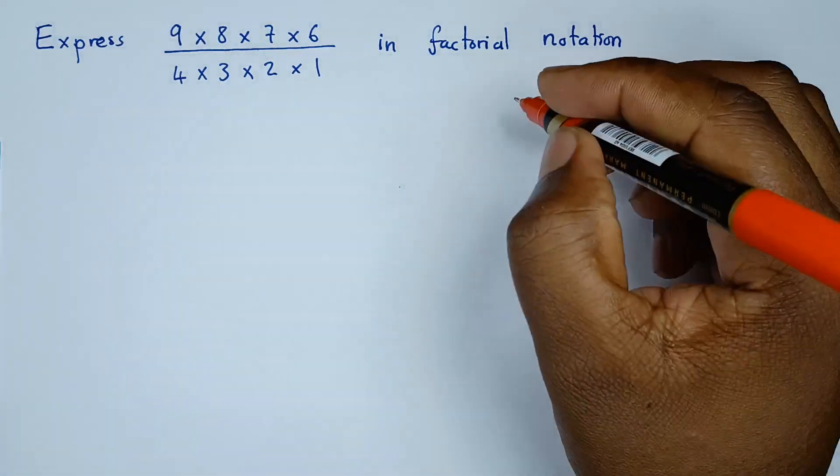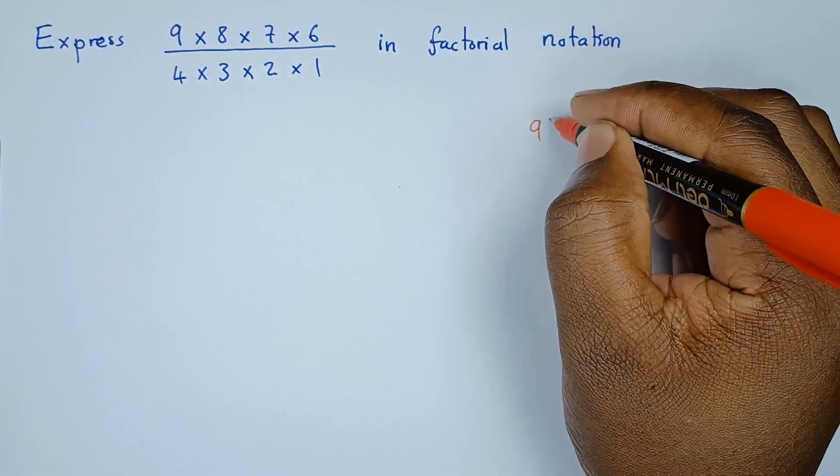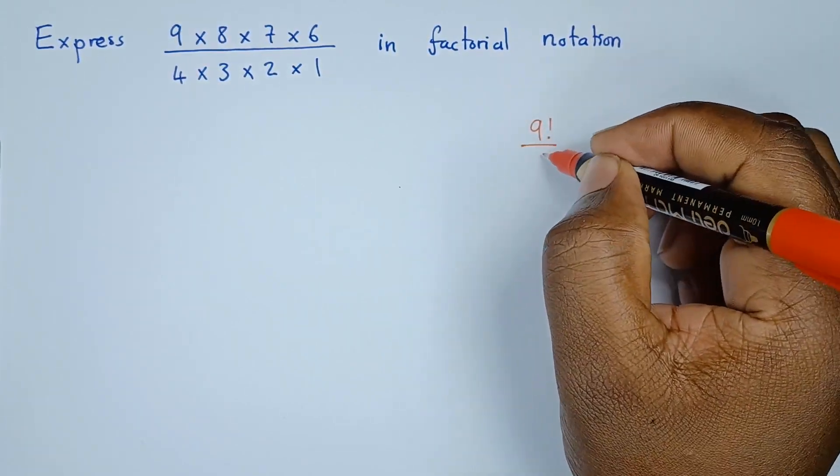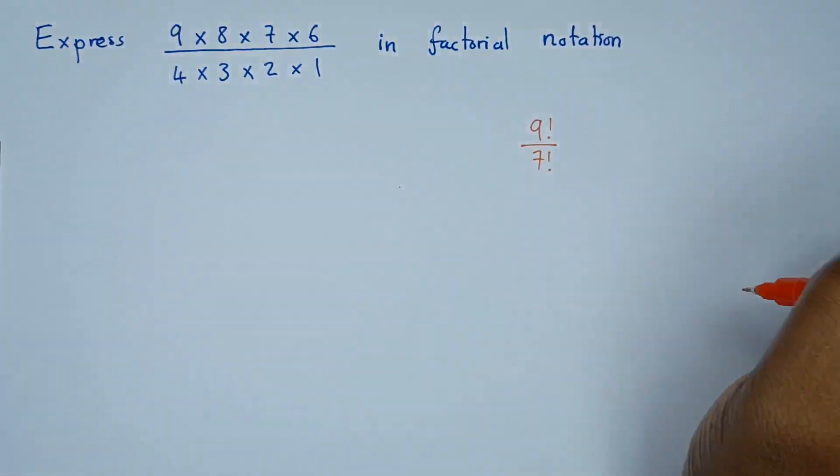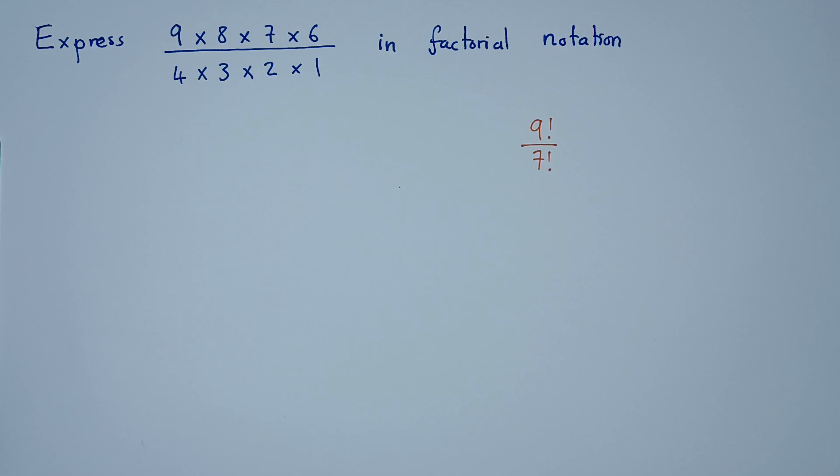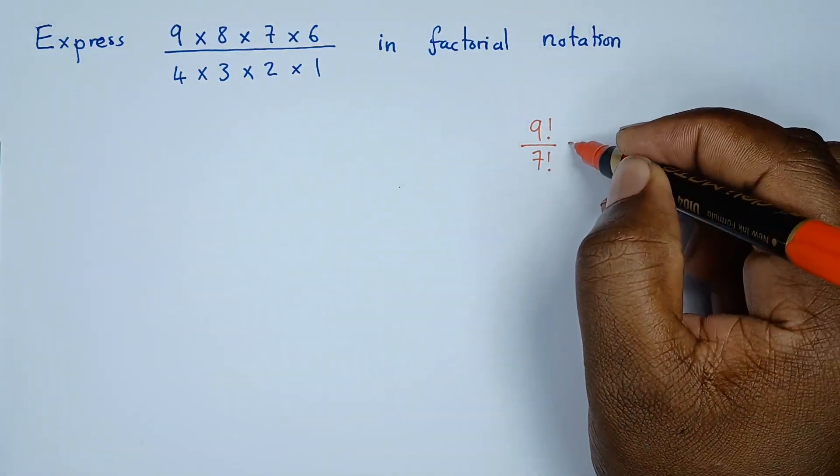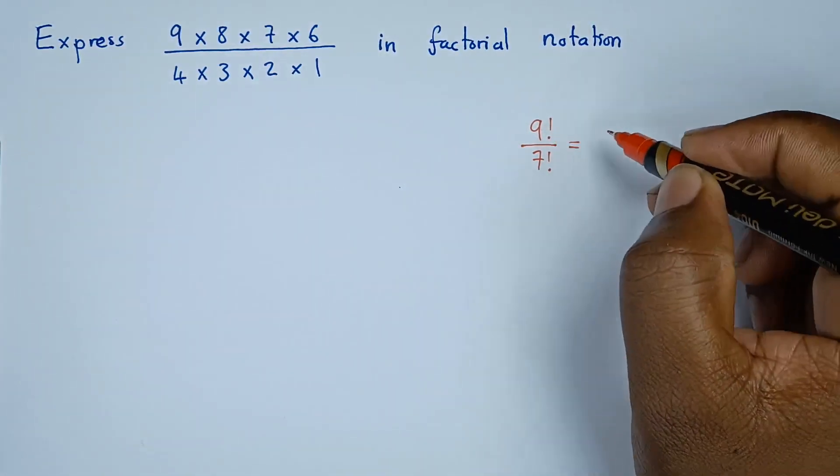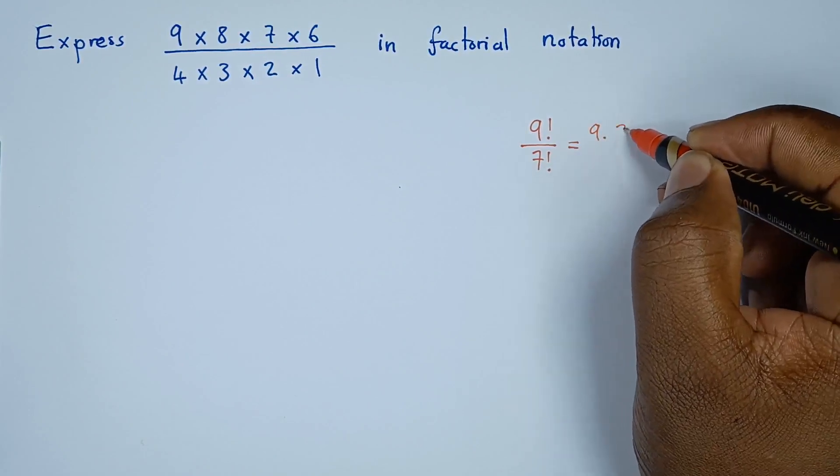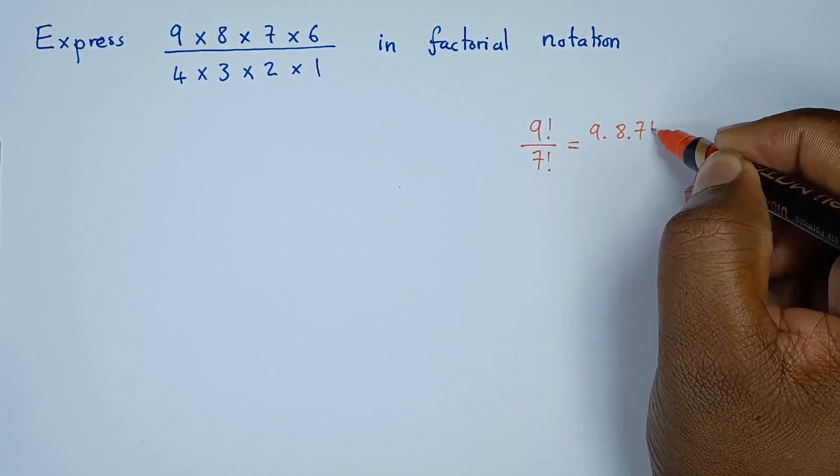If you've been given an expression, for example 9 factorial divided by maybe 7 factorial, we know that the factorial is simply 9 times 8 times 7 times 6 all the way down to 1. So we can reduce the 9 factorial such that it becomes 9 times 8 times 7 factorial.